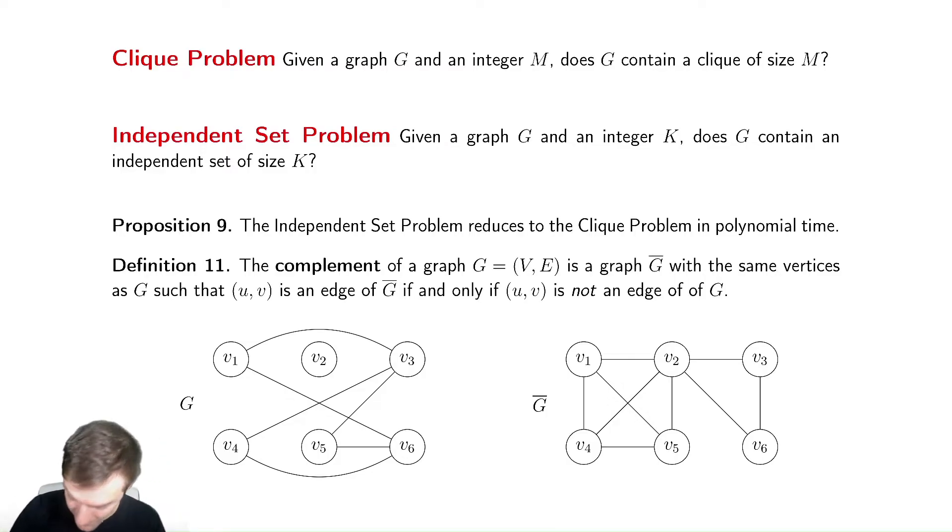Let's look at some cliques over here. A clique in this graph we already talked about is V1, V2, V4, V5. Over here, V1, V2, V4, V5. Huh, that's an independent set.